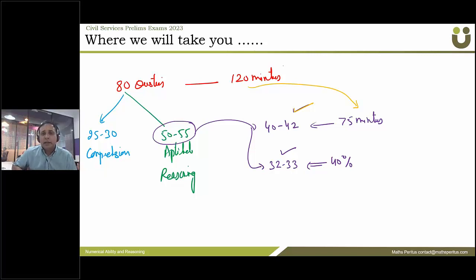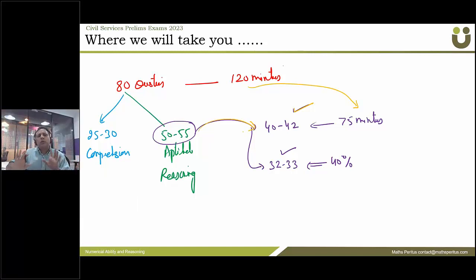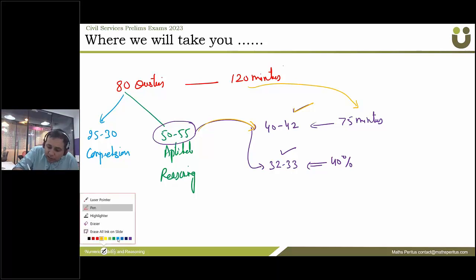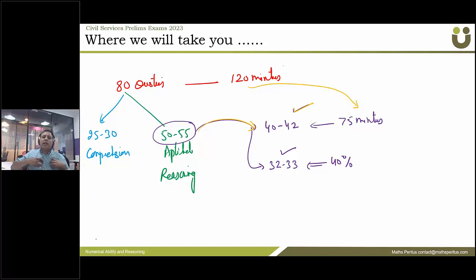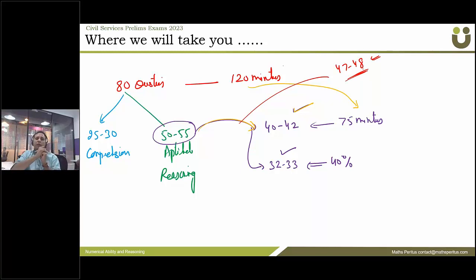Another thing guys, कि जो यह 40-42 का हमने ठीक करने का आपको बताया है, 50-55 में से — this is like average, जो की achievable है बड़े आराम से. अगर तुम में से कुछ लोग अच्छी मेनत करने को तयार हो, और हम जिस तरीके से आपको इन classes में पढ़ाएंगे, तो आप 50-55 में से 47-48 भी ठीक कर सकते हो. So charges, हमने average score बताया है आपको — this is a very realistic score.